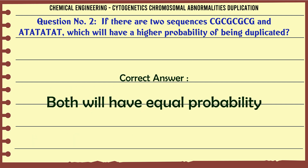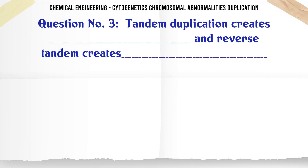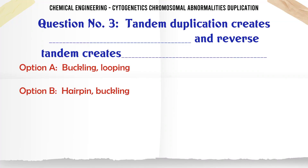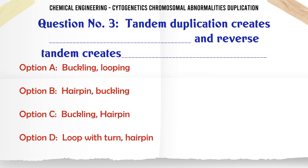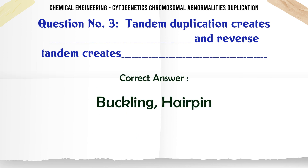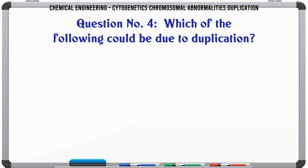Tandem duplication creates and reverse tandem creates: A: buckling, looping. B: hairpin, buckling. C: buckling, hairpin. D: loop with turn, hairpin. The correct answer is buckling, hairpin.